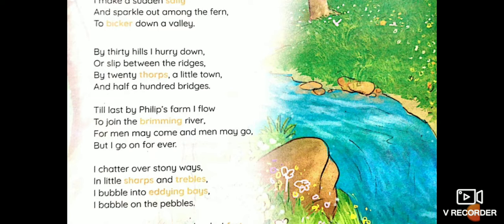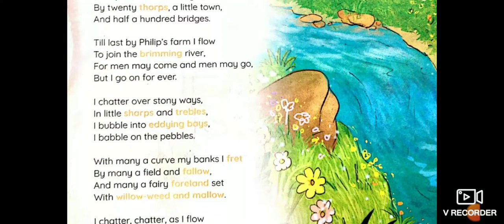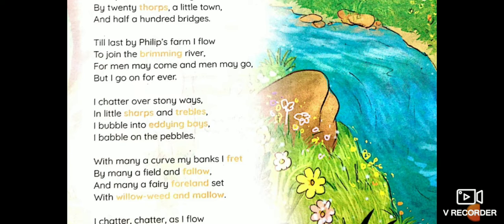Now next paragraph. 'Till last by Philip's farm, I flow.' Now Philip yaha pe — that is someone's farm, uska naam hai Philip. 'To join the brimming river.' Brimming ka matlab hota hai overflowing water, jahan se paani bohot tezi se behe raha hai. Now this line — 'for men may come and men may go, but I go on forever' — this is a repetition. You will see this line getting repeated in the poem.